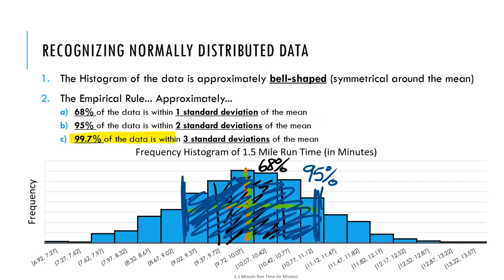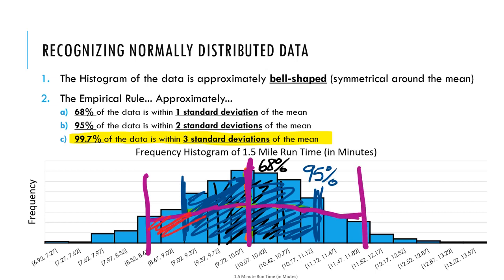Lastly, 99.7% of the data is within three standard deviations of the mean. So if the mean is in the center, and I go one, two, three standard deviations below the mean, and one, two, three standard deviations above the mean, the amount of data captured in that range — three standard deviations above and below the mean — is almost all of it: 99.7% of the data.